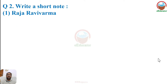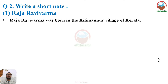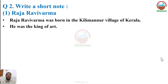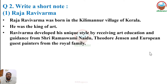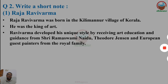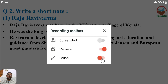Now for the long answers — write a short note. First: Raja Ravi Verma. Raja Ravi Verma was born in Kalimanoor village of Kerala. He was considered the king of art, the king of painting. Raja Ravi Verma developed a unique style of art.